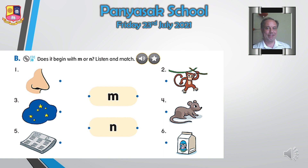Number one: Nose. Number two: Monkey. Number three: Night. Number four: Mouse. Number five: Newspaper. Number six: Milk.